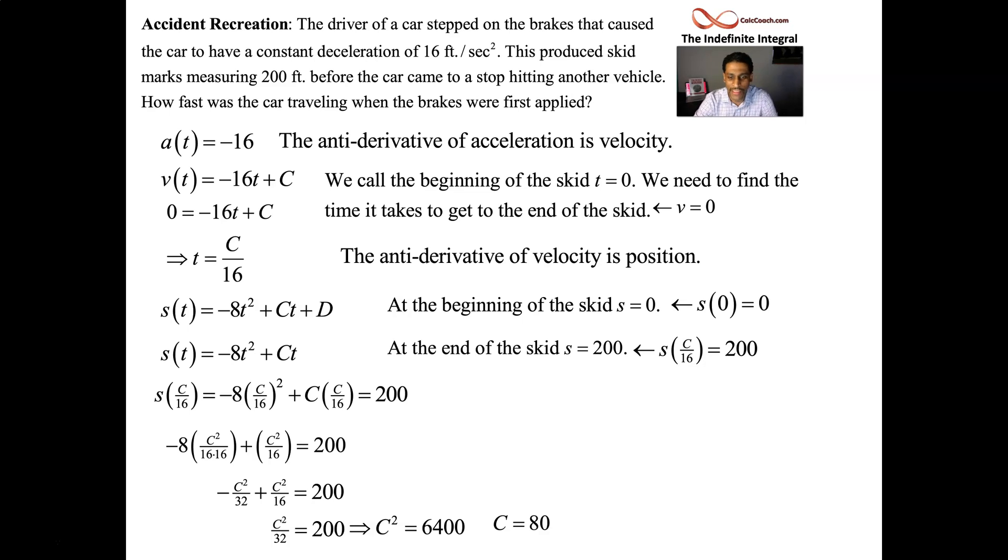What is C? So what C is, is the velocity when time equals zero. That's what we're looking for. The units are a little weird for us as far as knowing what was the person speeding or not because they're in feet per second, but that's what it is, 80 feet per second. So we'll have to go to a computer at some point and convert this to miles per hour, so you can get an idea, or kilometers per hour if you're in another country that uses the metric system.